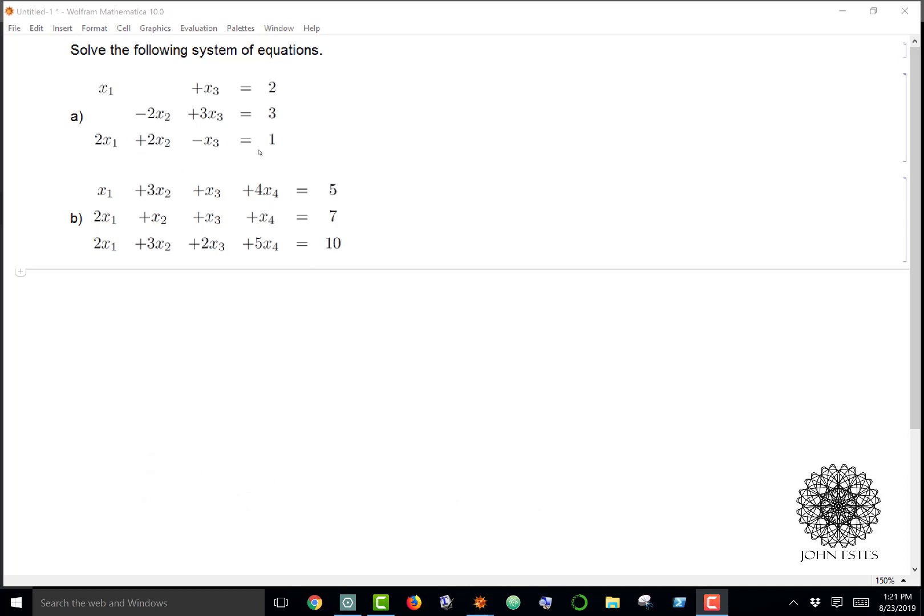I have three equations: x1 plus x3 equals 2, negative 2x2 plus 3x3 equals 3, and 2x1 plus 2x2 minus x3 equals 1. I'm going to show you how to solve this.